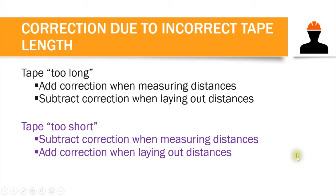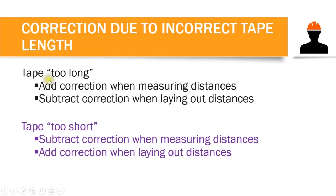Now, if our tape is found to be too long, we add corrections when measuring distances. And if our tape is too long, we subtract correction when laying out distances. But if our tape is found to be too short, we subtract correction when measuring distances and we add corrections when laying out distances. You have to make yourself familiar with this concept: when the tape is too long, add correction when measuring and subtract correction when laying out.